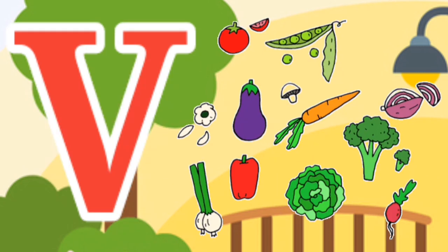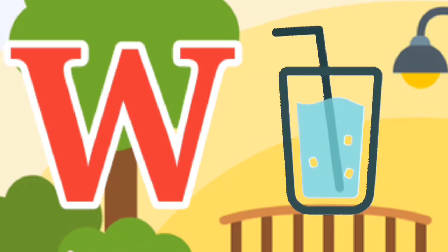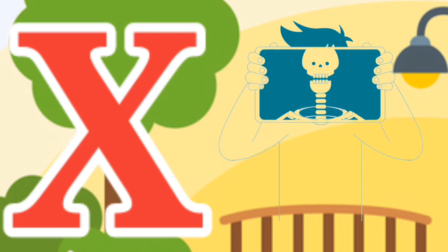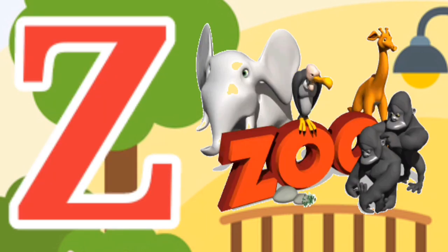V for Vegetable, W for Water, X for X-Ray, Y for Yellow, Z for Zoo.